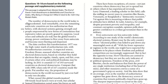I'll just review the opening paragraph. The number of democracies in the world today is unprecedented. Remarkably, even the remaining autocratic countries are less authoritarian than before, with electoral systems gaining strength and people empowered by new forms of contestation that repressive rulers are poorly geared to suppress. Local crises and setbacks are real, but the global trend is strong. Power continues to flow away from autocrats and become more fleeting and dispersed — today we have many more democracies than autocracies.